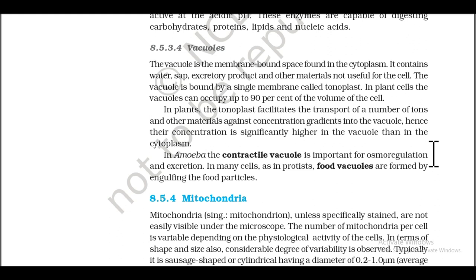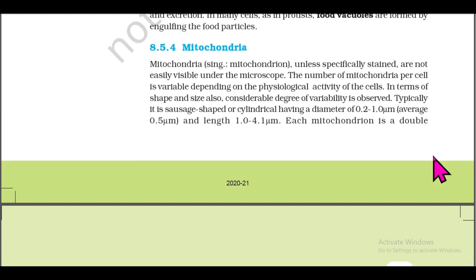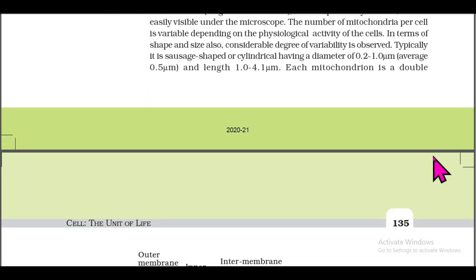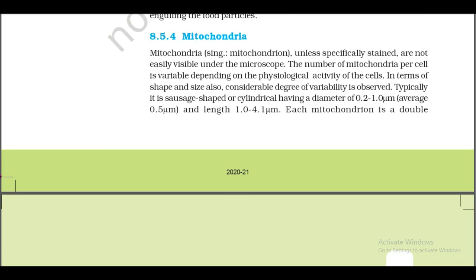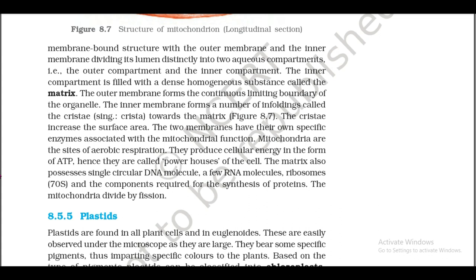In Amoeba, the contractile vacuole is important for osmoregulation and excretion. In many cells, such as in protists, food vacuoles are formed by engulfing food particles. Section 8.5.4: Mitochondria. Mitochondria (singular: mitochondrion), unless specifically stained, are not easily visible under the microscope. The number of mitochondria per cell is variable depending on the physiological activity of the cell. Typically, a mitochondrion is sausage-shaped or cylindrical, having a diameter of 0.2 to 1.0 micrometer and length 1.0 to 4.1 micrometers.